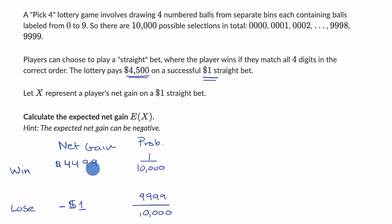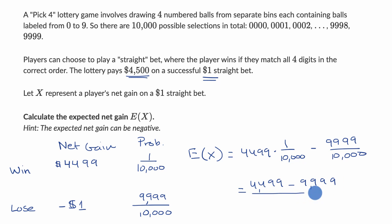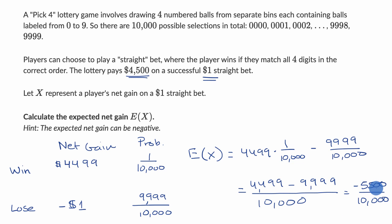The expected net gain is the weighted average of these two outcomes: 4,499 times (1/10,000), plus negative 1 times (9,999/10,000). This equals (4,499 minus 9,999) over 10,000, which is negative 5,500 over 10,000. That simplifies to negative 55 over 100, or negative $0.55.